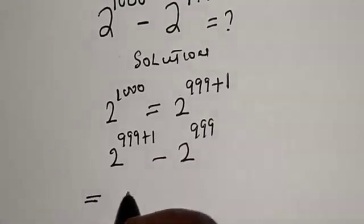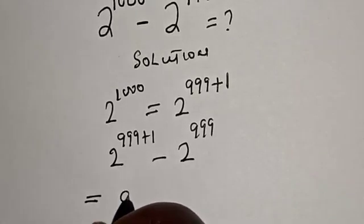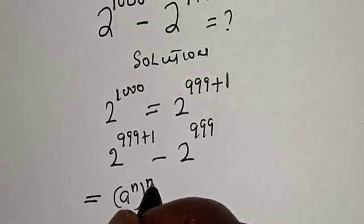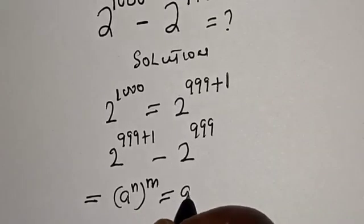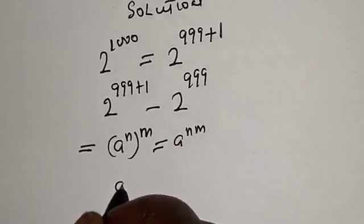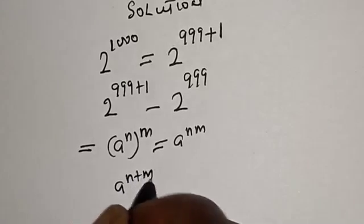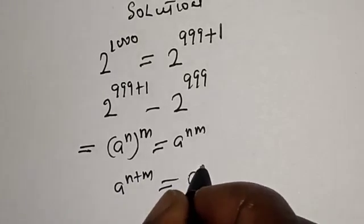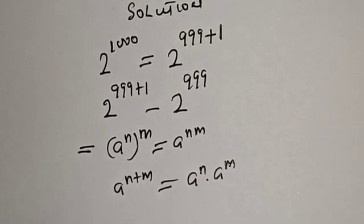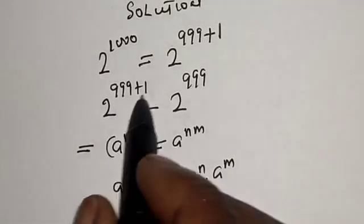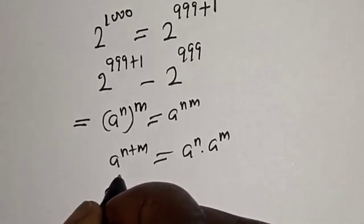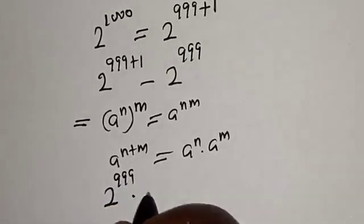Remember this rule: a raised to power n times m is equal to a raised to power n raised to power m. Also, a raised to power n plus m is equal to a raised to power n multiplied by a raised to power m. Then this becomes 2 raised to power 999 multiplied by 2 raised to power 1.